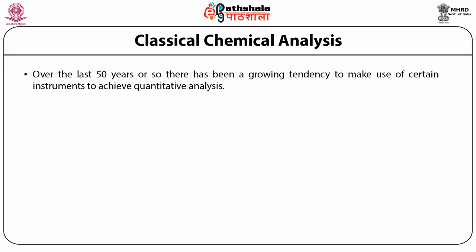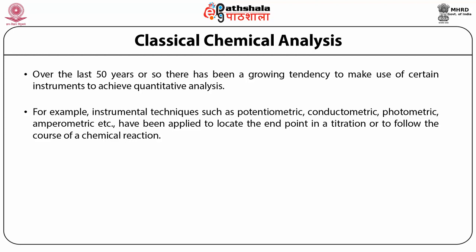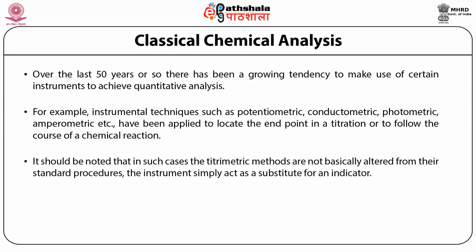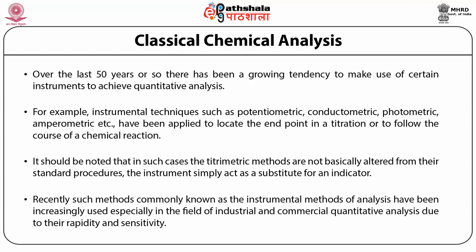Over the last 50 years or so, there has been a growing tendency to make use of certain instruments to achieve quantitative analysis. Instrumental techniques such as potentiometric, conductometric, photometric, amperometric, etc., have been applied to locate the end point in a titration or to follow the course of a chemical reaction. In such cases, the titrometric methods are not basically altered from their standard procedure; the instruments simply act as a substitute for an indicator. Such methods, commonly known as instrumental methods of analysis, have been increasingly used especially in industrial and commercial quantitative analysis due to their rapidity and sensitivity.